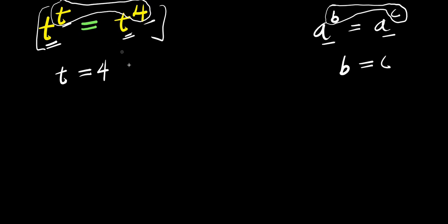Now that is one way of solving it. If you want to solve for the other values of t, because it is clear that this particular exponential equation has more than one solution, so this is just one of the solutions. If you want to get all the solutions, this is how you are going to do it.